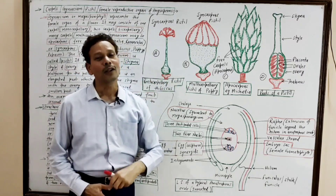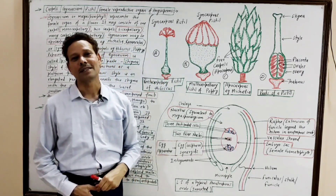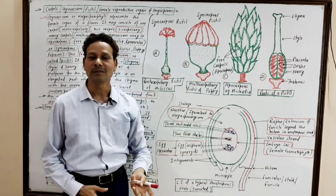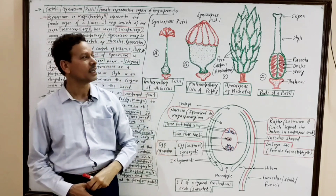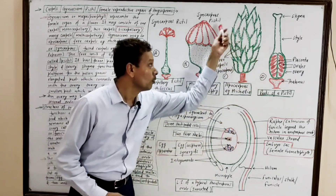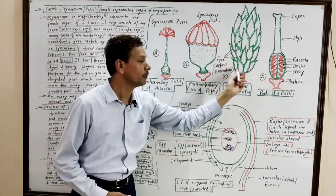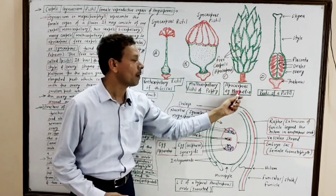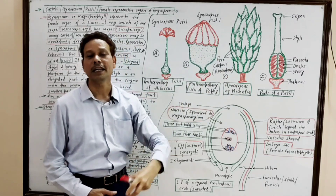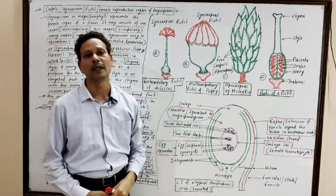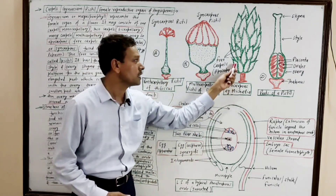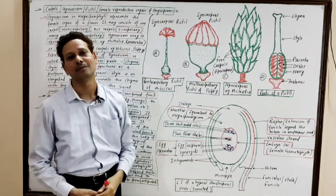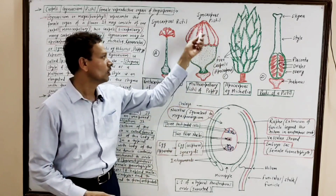All these carpels may remain free. Then the condition is apocarpous. The free carpels are seen in case of Michelia and Ranunculus, where all these carpels remain free.